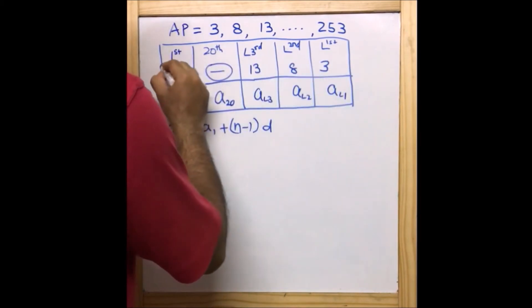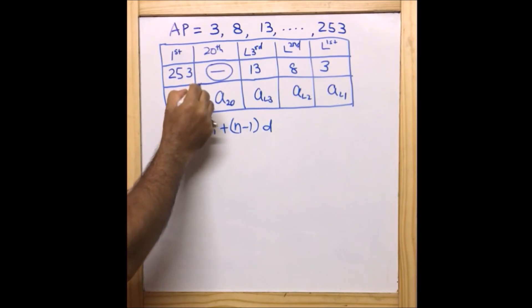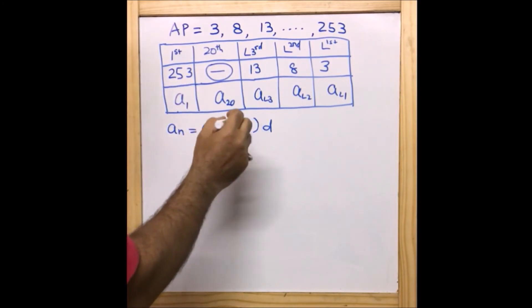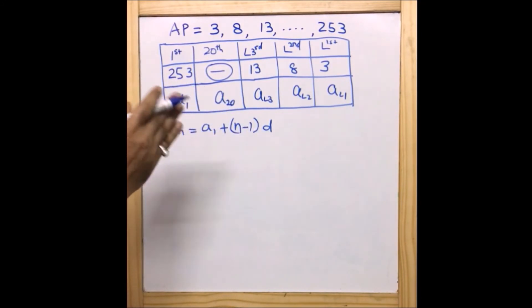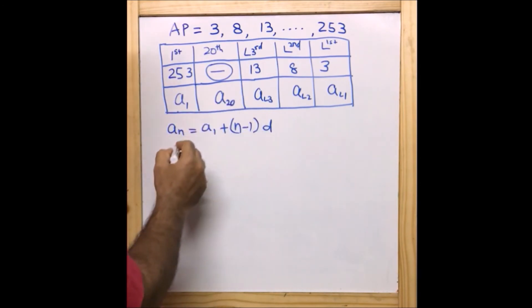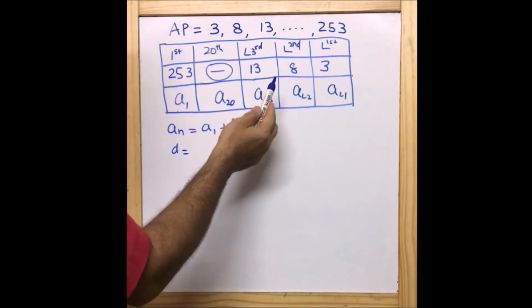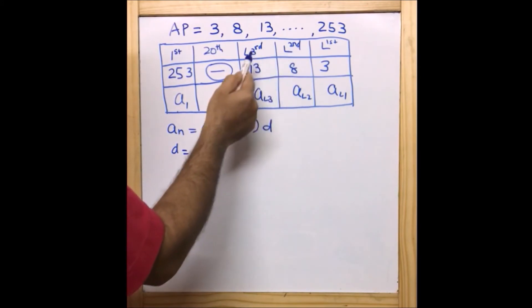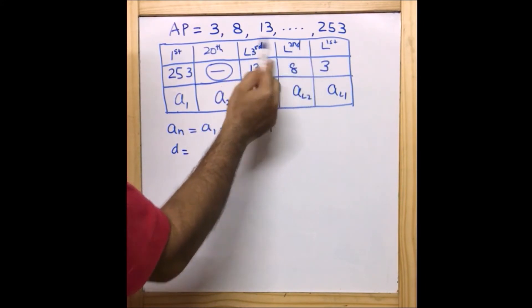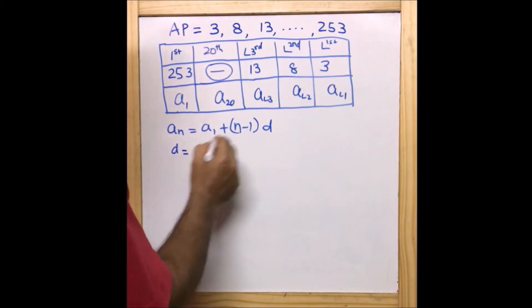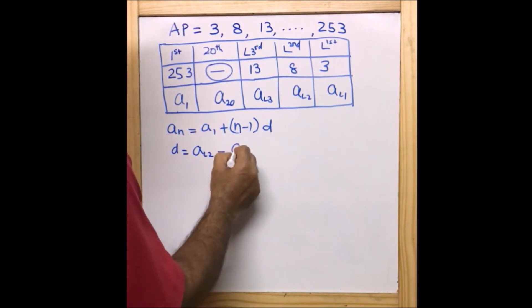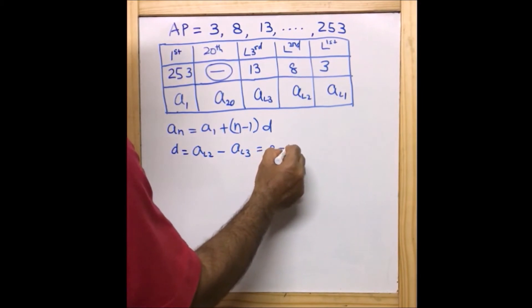We are going to find out the common difference. Because we have already reversed it, the common difference d will be any of the consecutive terms. We can take either l2 minus l3 or l1 minus l2. Let us take a_l2 - a_l3, so that is equal to 8 - 13.